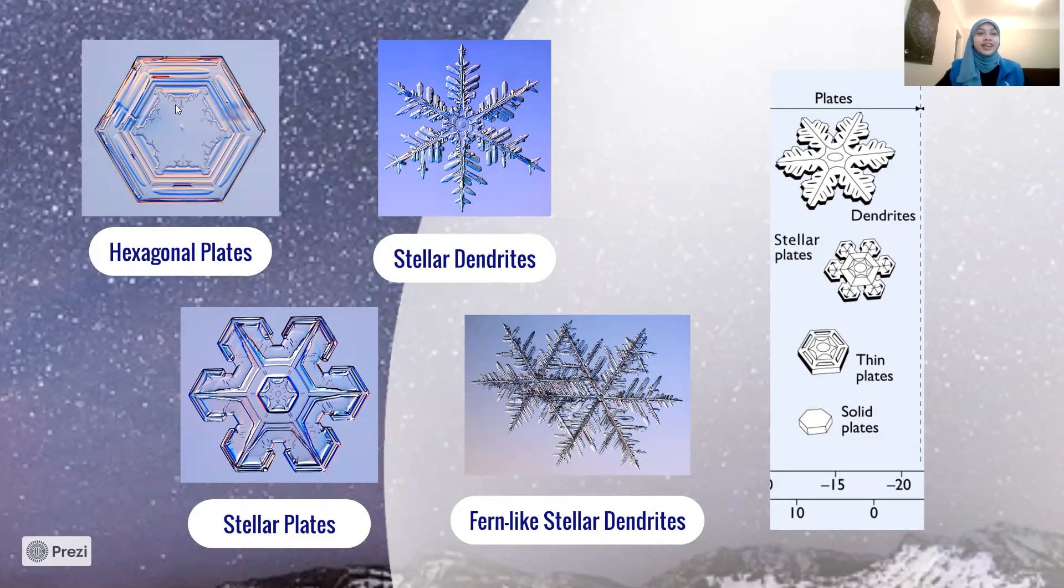First, we have the hexagonal plates. And as the name suggests, it has six sides. Sometimes these plates are just plain hexagons, or sometimes they can have patterns in the center like this one.